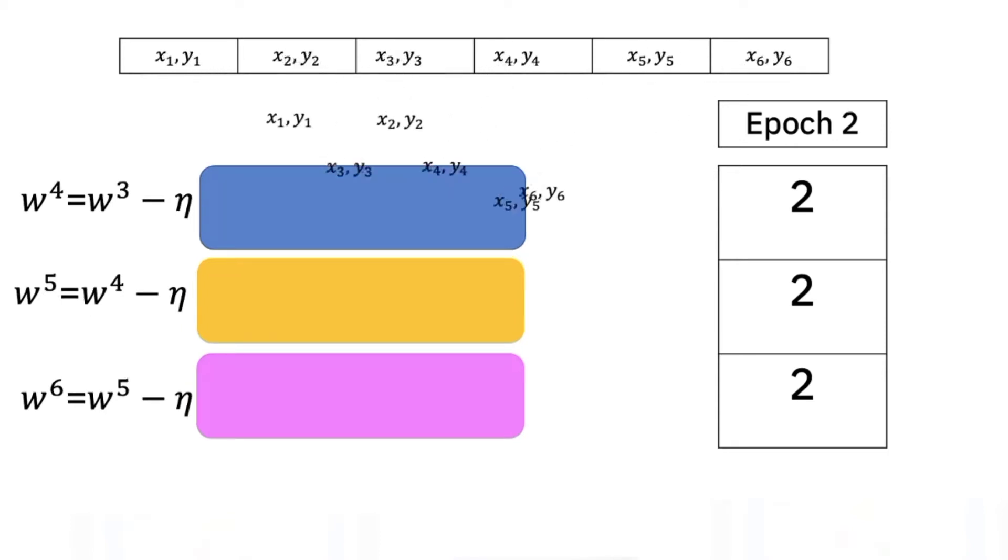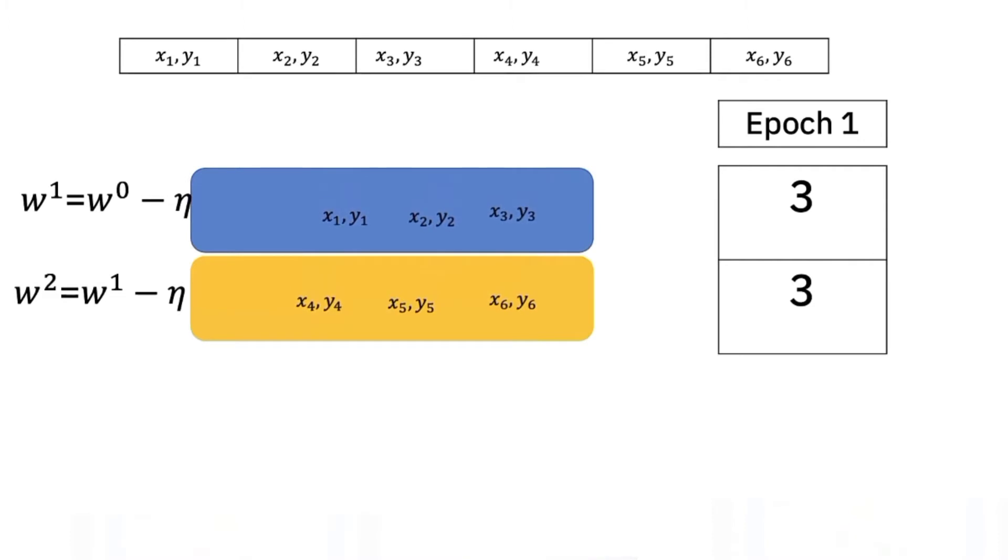For the second epoch it will also take three iterations. In this case our batch size is two. It only takes two iterations to complete one epoch. For the second epoch it also takes two iterations.